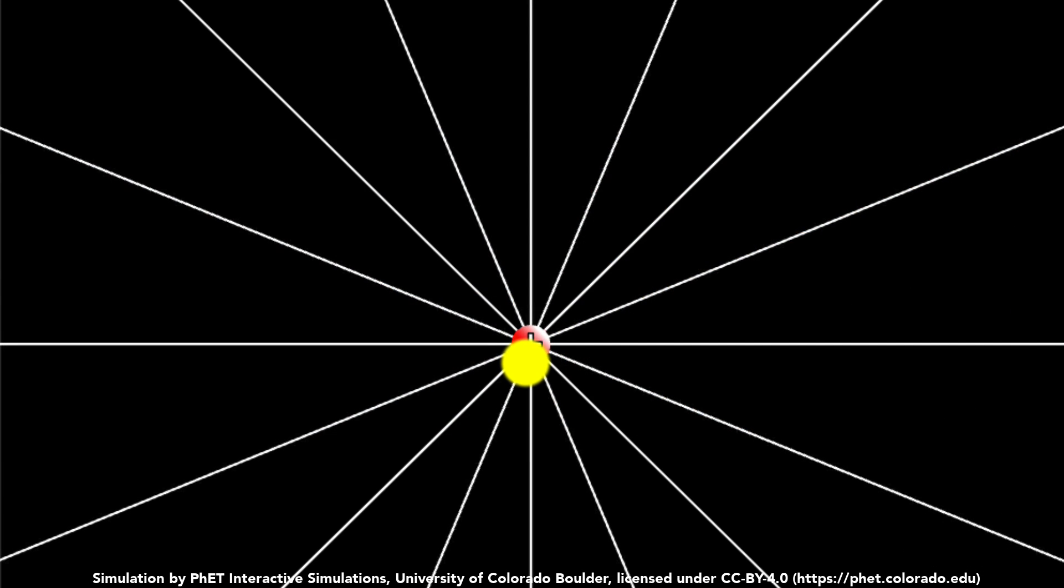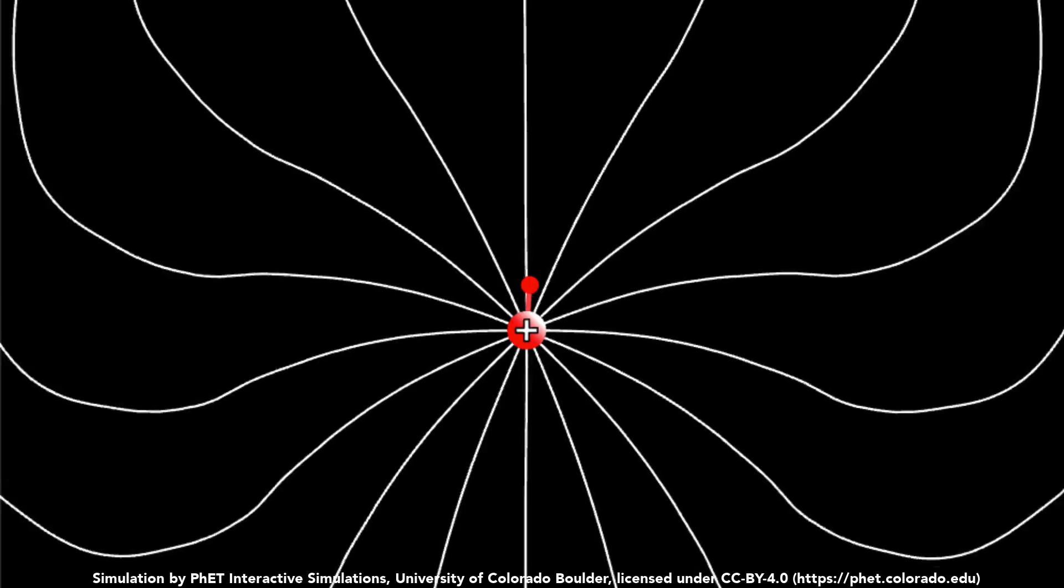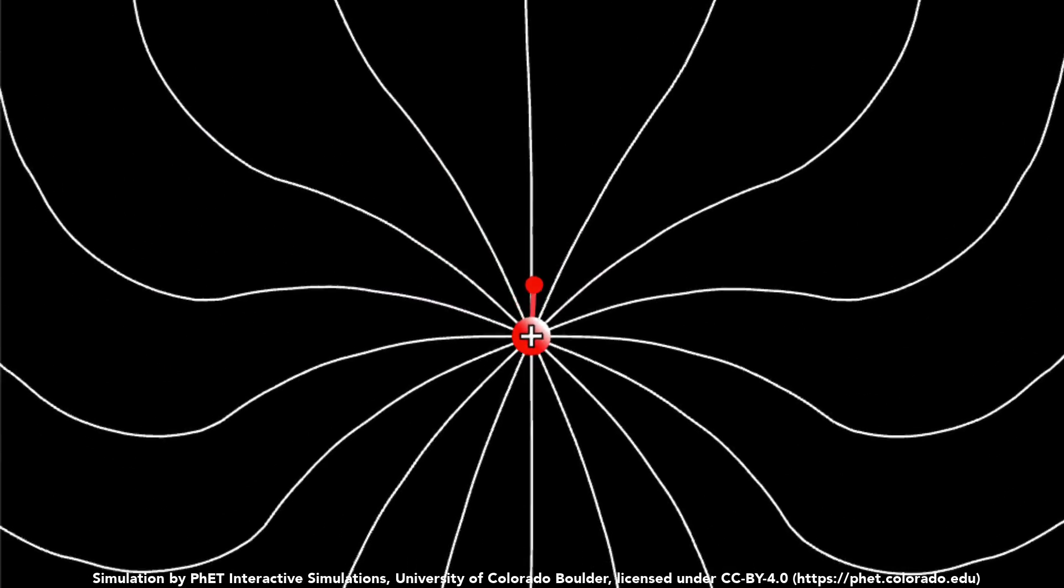To answer that question, let's look at a PhET simulation over here. I have a charge over here and it's producing an electric field. An electric field is the reason why if you place another charge over here, it experiences a force. Similarly, magnets interact with each other using magnetic fields. Now, here's a question. What's going to happen if I were to wiggle this charge? Well, let's see. I'm going to wiggle it. Do you notice ripples going out just like the ripples in the pond?